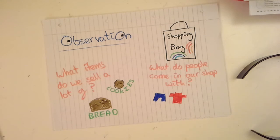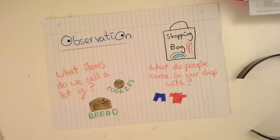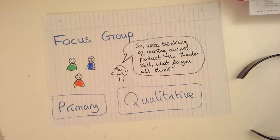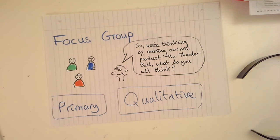We could also do something more internalised — just look at what items we're selling a lot of. If we're not selling much brown bread but selling loads of cookies, let's advertise our cookies, raise the price a bit, or produce more and put less attention on the bread. The last method I'm going to talk about is focus groups, or alternatively interviews. A focus group is like an in-depth interview, but we're talking to quite a few people about a new product or marketing technique.